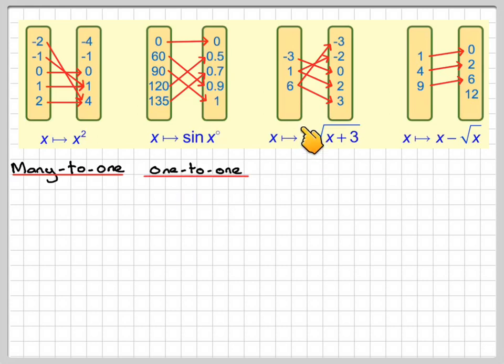Now in this case, if we take 6 for example, it maps onto two things: minus 3 and 3. And also 1 maps onto minus 2 and 2. So this is called a one-to-many. And the final case is just going to be one-to-one.